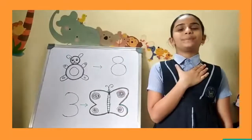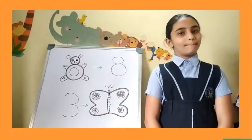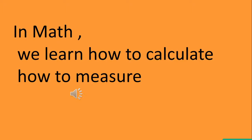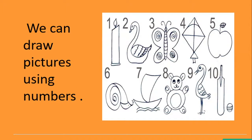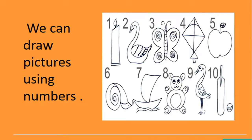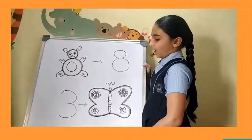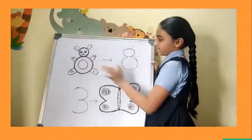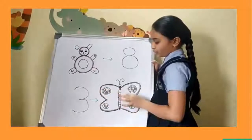Hi, my name is Lakshmi Pranati Suchita. I am going to explain how numbers can also be used creatively. In math, we learn how to calculate, how to measure, how to calculate time, etc. But did you know that numbers can be used to draw various pictures? Using the number 29, we can draw a swan, and using digits 1 and 5, you can draw a cock. I drew a teddy bear with the number 8, and with the number 3, I drew a butterfly.